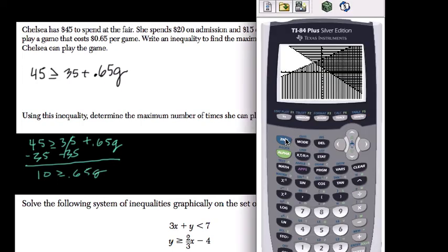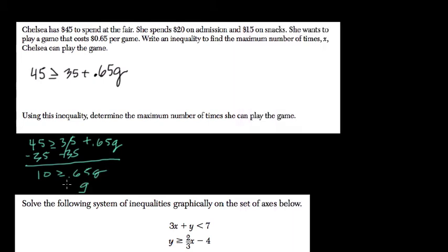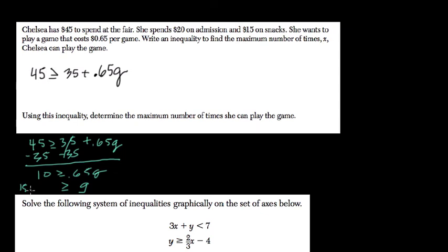So here we can do $10 divided by $0.65. And that means G has to be less than or equal to 15.38, or 15.38.